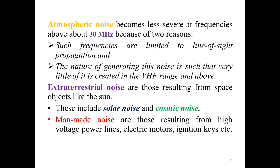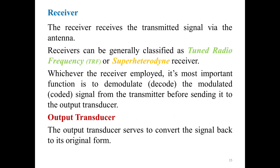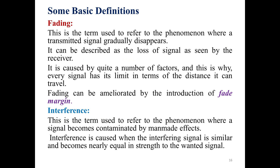Extraterrestrial noise results from space objects like the sun, and includes solar noise and cosmic noise. Man-made noise results from high-voltage power lines, electric motors, ignition systems, etc. The receiver receives the transmitted signal via the antenna. Receivers can be generally classified as tuned radio frequency or superheterodyne receivers. Whatever receiver is employed, its most important function is to demodulate the modulated signal from the transmitter before sending it to the output. The output transducer serves to convert the signal back to its original form.